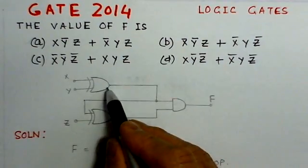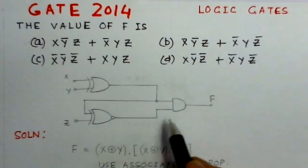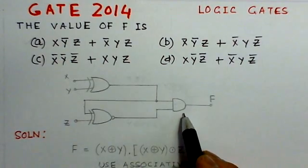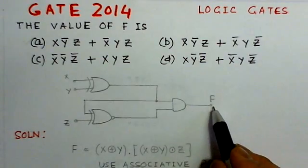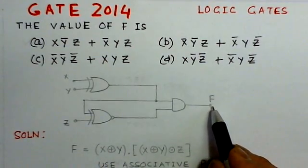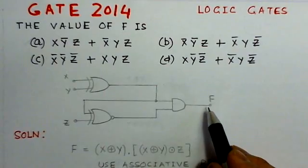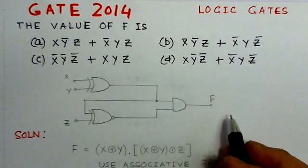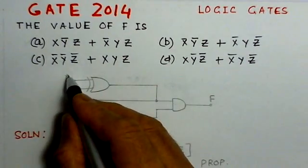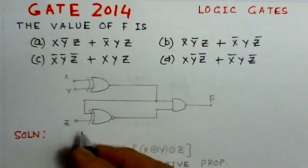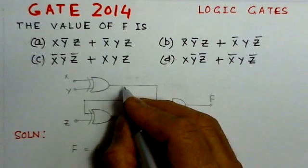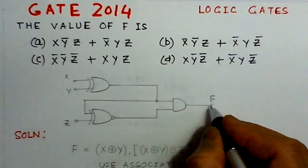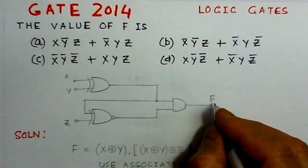This circuit consists of one XOR gate, one XNOR gate, and both the outputs of these gates are fed to an AND gate. We have to find the corresponding output of this combination of gates. The inputs applied here are X, Y and Z. We will try to find out the outputs of each gate, and then try to find out the final output F.